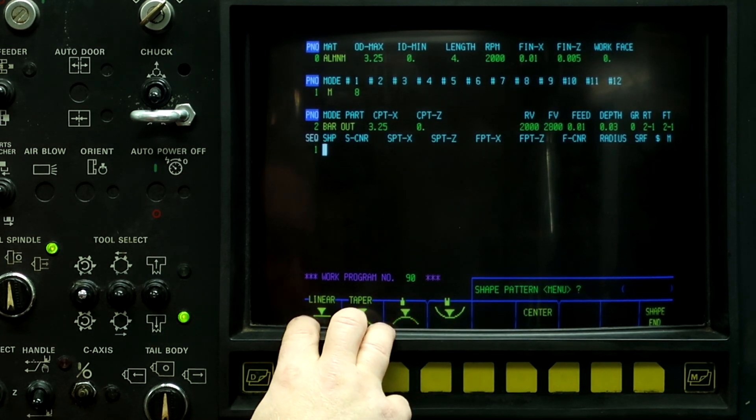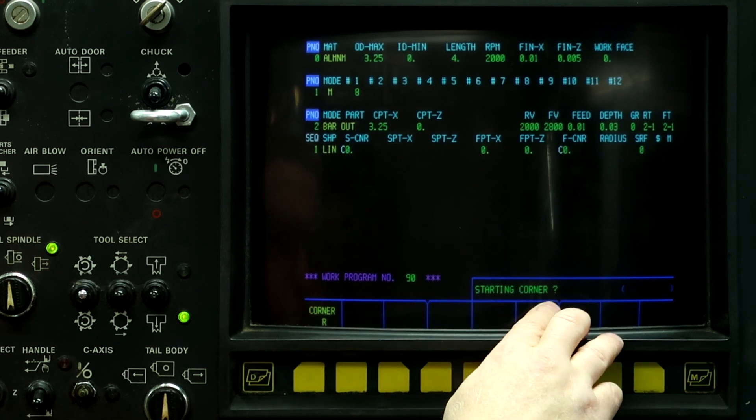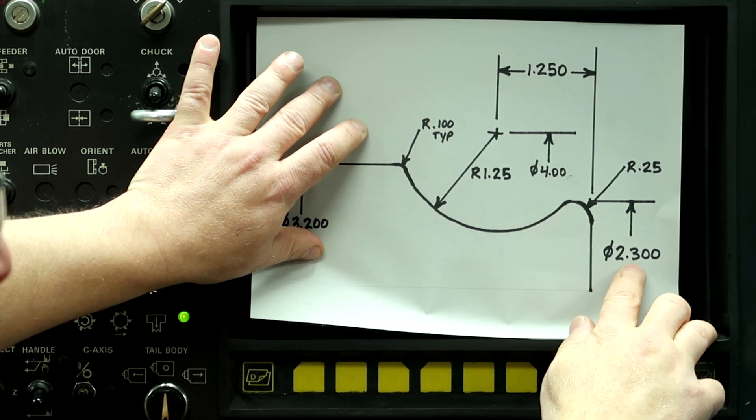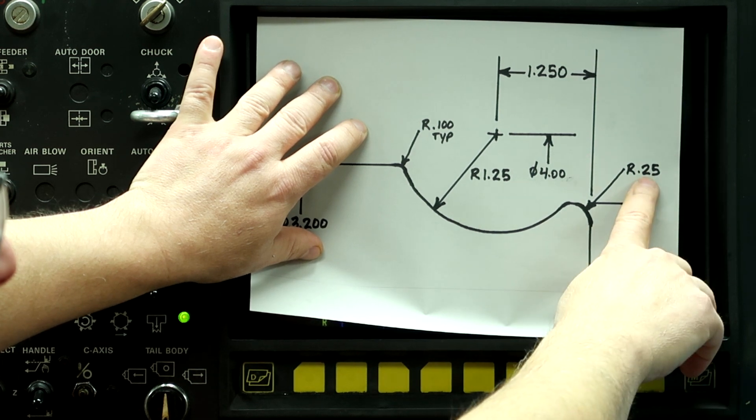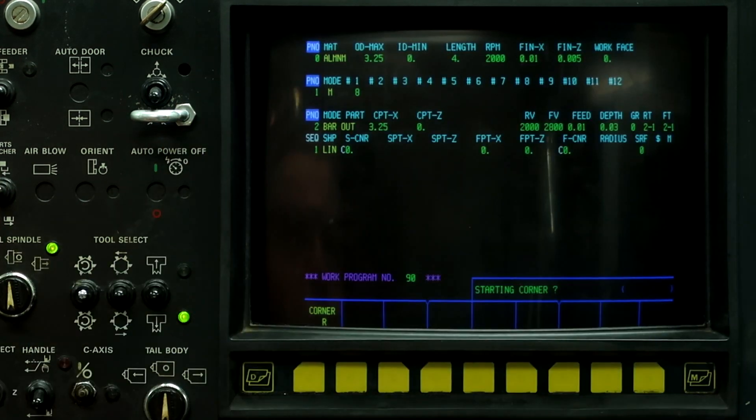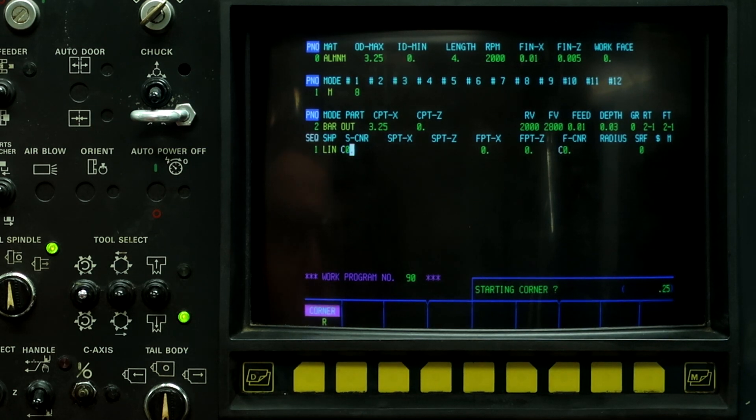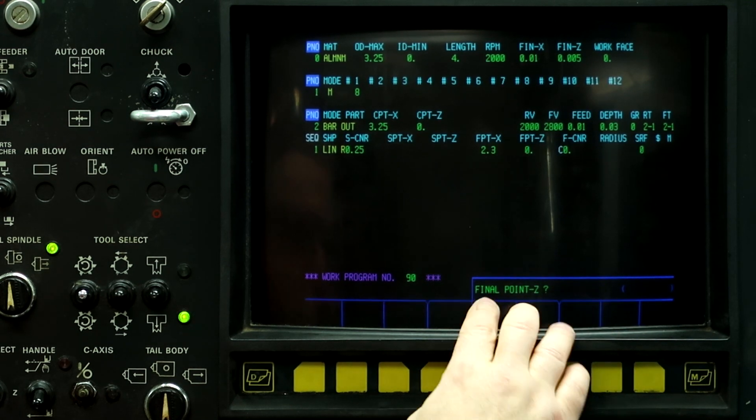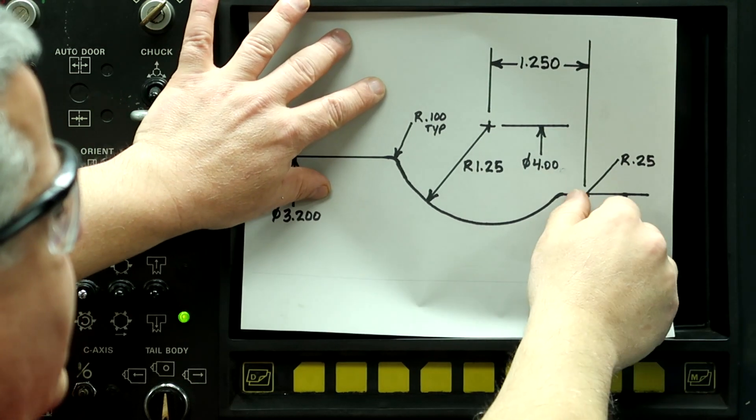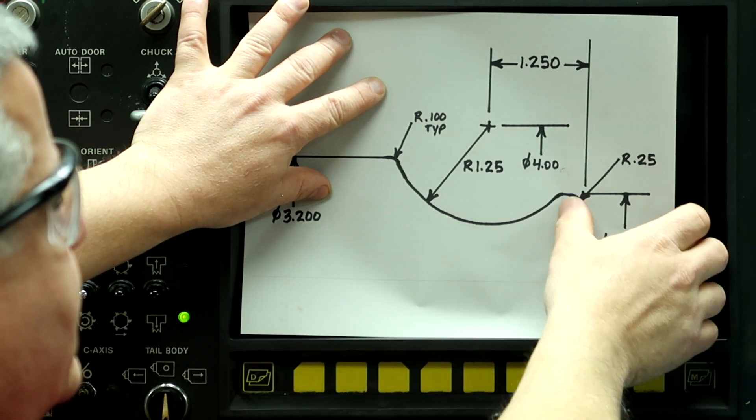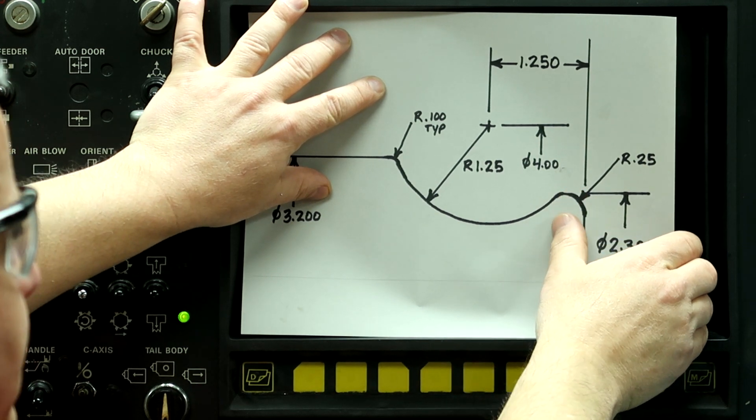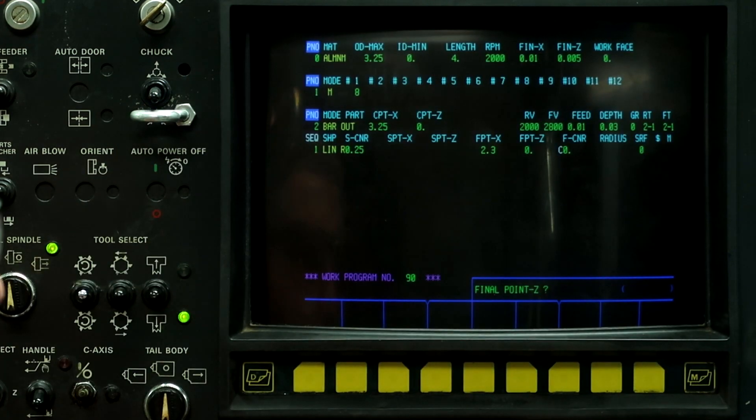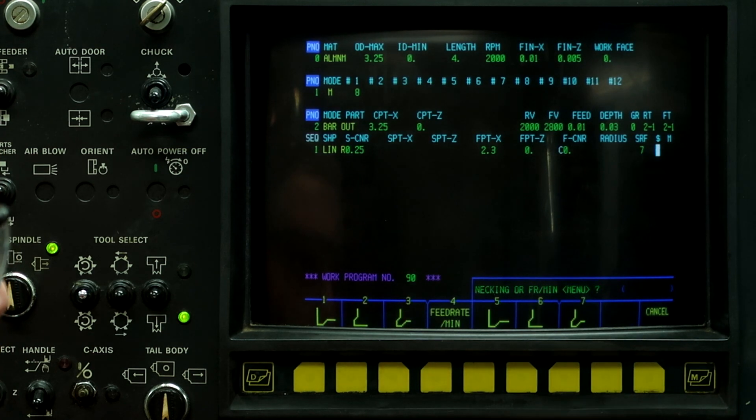So now what we're going to do is push linear, starting corner. So we have a diameter here that has a small flat on it, and it's 2.3 inch diameter with a quarter inch radius. So push radius, 0.250, final point on X, 2.3 inches. Final point on Z, we don't know the final point on Z, so I'm going to leave it at zero for right now. And we'll come back to that in a little bit. Surface roughness is seven, down arrow.